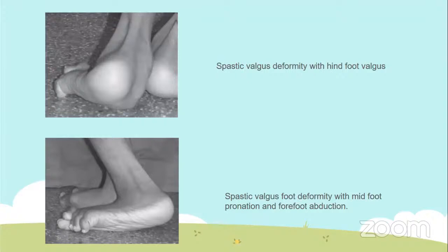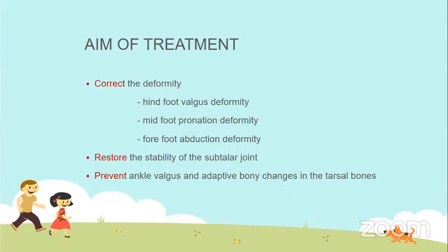The child may present with spastic valgus foot deformity showing hind foot valgus, mid-foot pronation, and forefoot abduction. The aim of treatment is to correct the deformities (hind foot valgus, mid-foot pronation, forefoot abduction), restore stability of the subtalar joint, and prevent ankle valgus — because once ankle valgus develops it is much more difficult to manage.